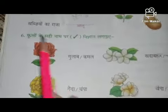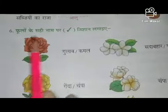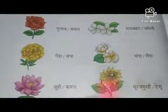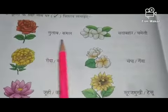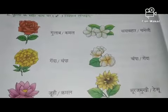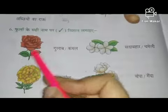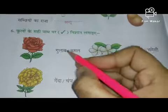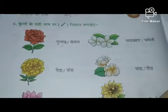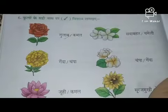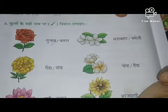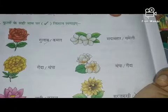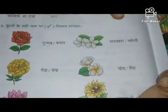Now come to last question. Fool'on ke sahi naam par sahi nishan lagana hai aapko, thik hai. Yaha pe kuch flowers dhi hai. Unke aage do naam likhe hai. Aapko batana hai ki koon sa naam correct hai. Uspe hum tick karenge. Pehla kya banaya — gulab. So gulab par tick karo. Yahan pe likha hai gulab, gulab or kamil. So kaun sa sahi hai?